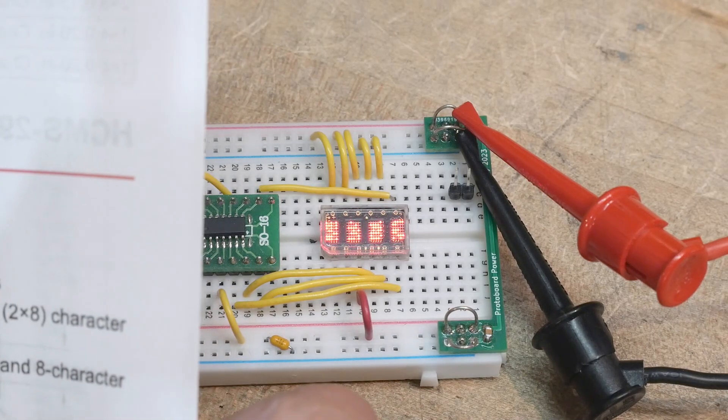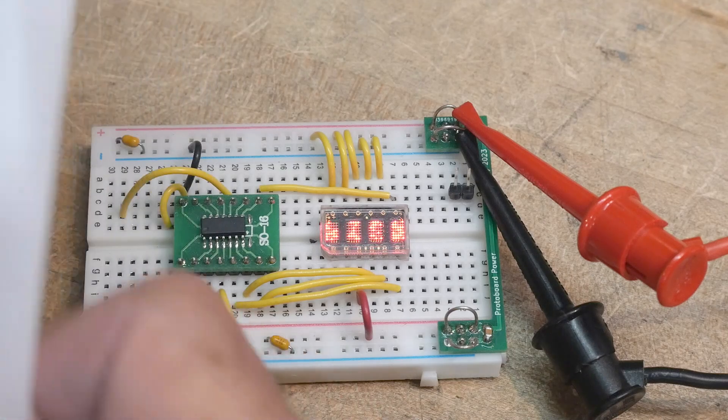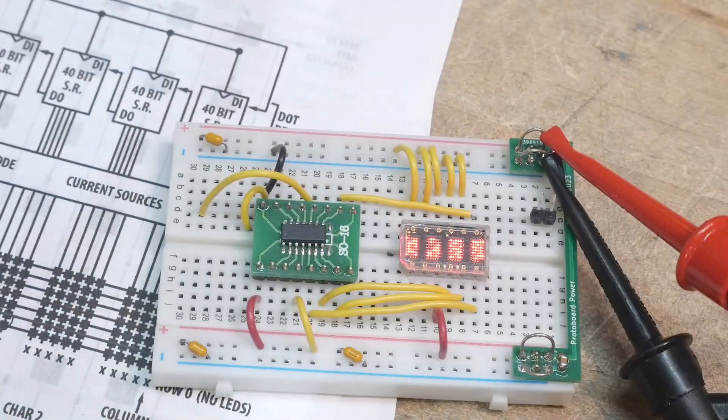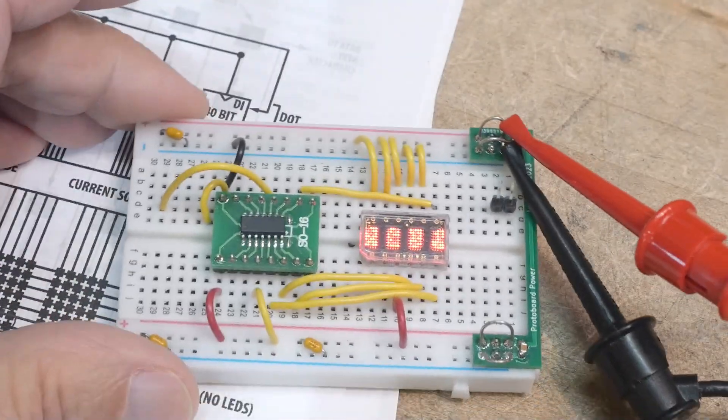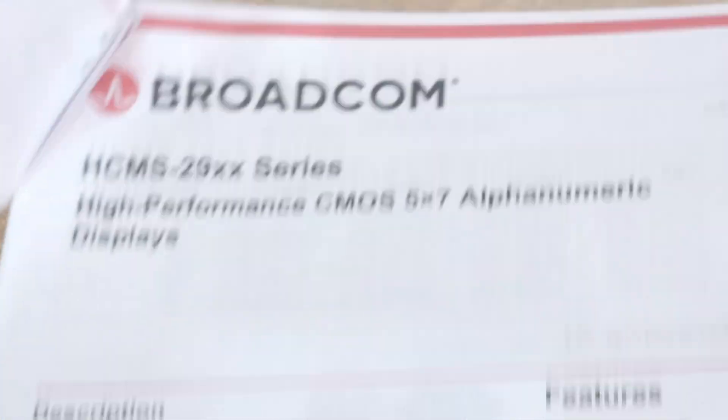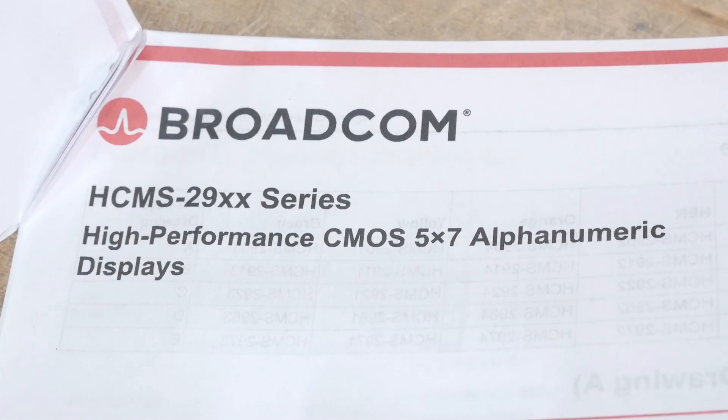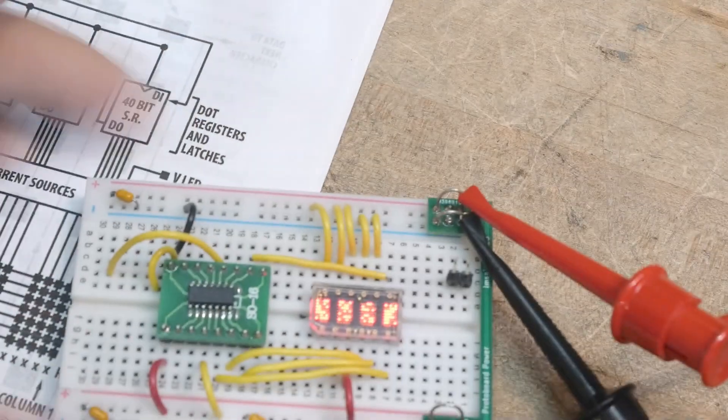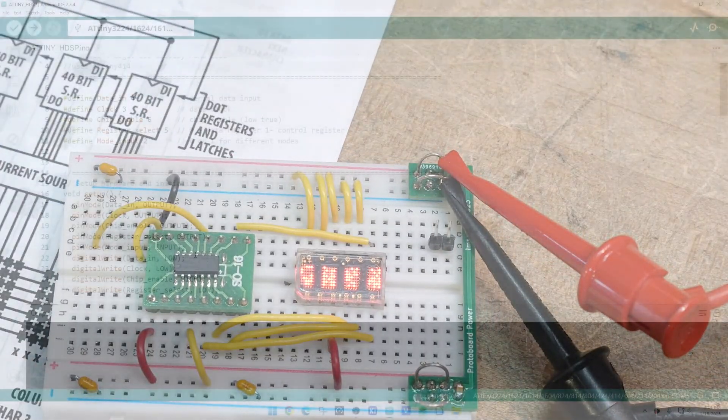What did I say it was? It was an HCMS-2902 LED from the way back days. You can still buy these or not. This is a Broadcom data sheet. Broadcom ended up with the old HP stuff. They do their fiber optic stuff and other things. I'm not sure exactly what all Broadcom got out of HP, but LEDs is one of them and they still support the LED line.